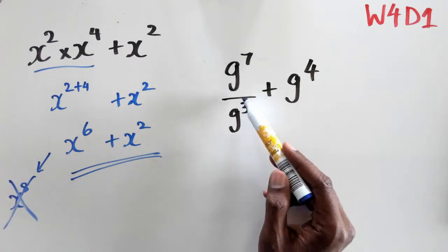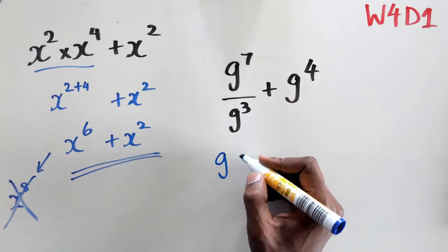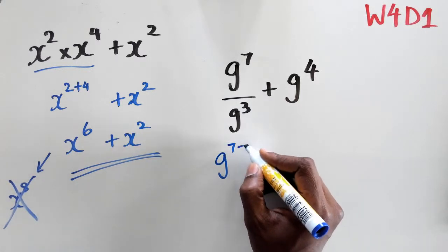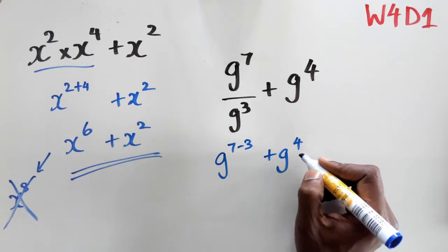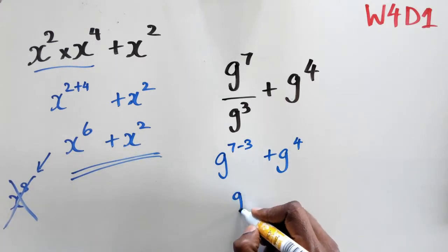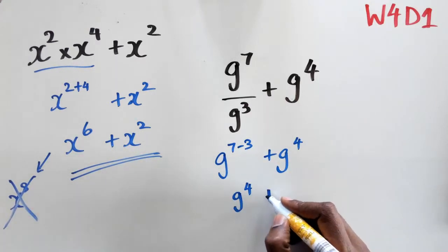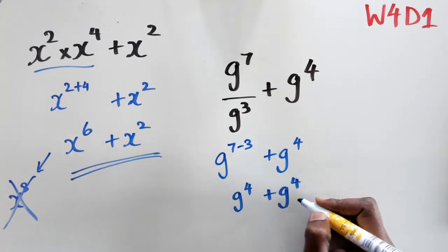Now we know that simplifying this expression means subtracting the powers. So g to the power of 7 minus 3, plus g to the power of 4. g to the power of 7 minus 3 is g to the power of 4, and g to the power of 4 stays as it is.